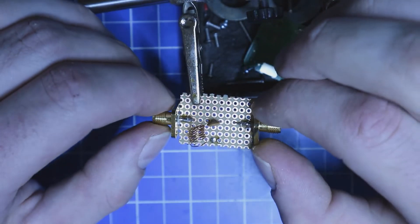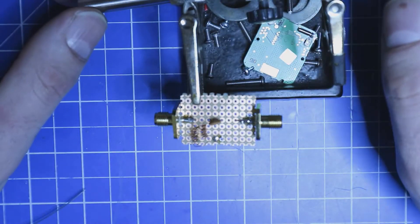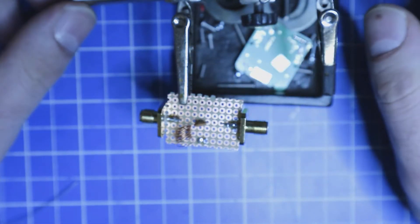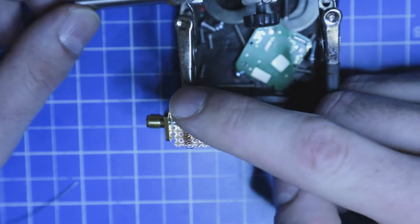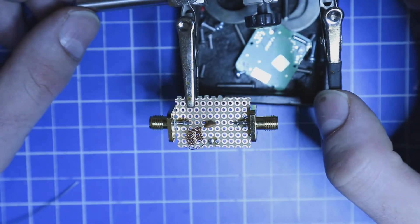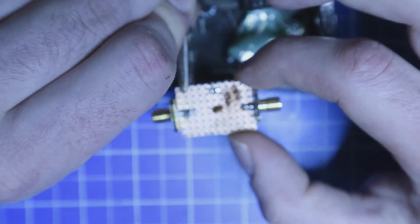The next thing we're going to do is we have to make a connection between the housings of the connectors. This will be our ground connection. And then we can solder in the cables.